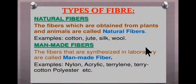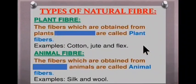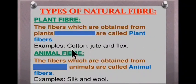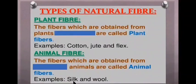Man-made fiber or synthetic fiber are the fibers that are synthesized in labs. Examples are nylon, polyester, etc. Natural fibers are again divided into two categories: plant fiber and animal fiber. Fibers obtained from plants are called plant fiber — for example, cotton, jute and flax, which we studied in class 6. Animal fiber is the fiber we get from animals, for example silk and wool.